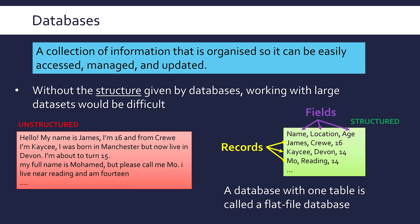The record for James has got three fields: James, Crewe, 16. The record for Mo has got Mo, Reading, and 14 as those fields. The intersection of a field and a record is the actual individual bit of data. You can see why having this structure makes it much easier — you could write code to interpret this database, but not the unstructured text.